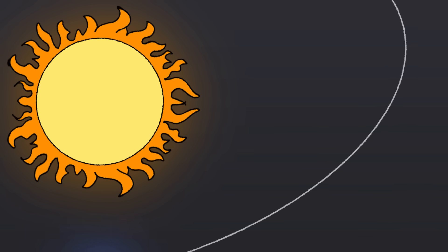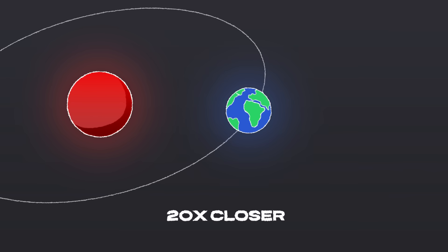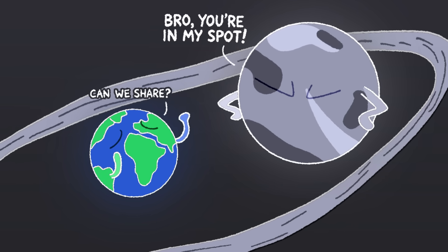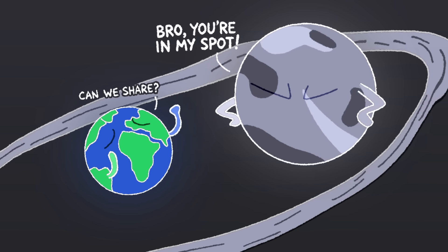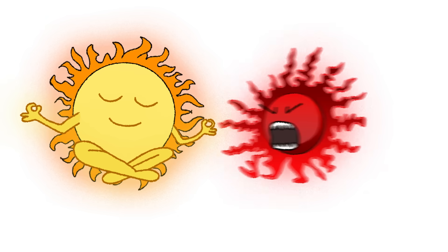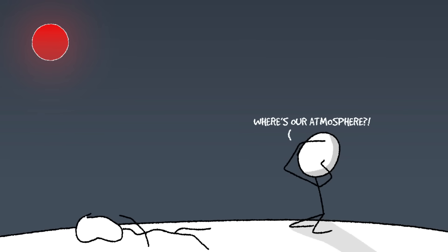If we swapped our sun for Proxima Centauri, Earth would need to be moved 20 times closer just to stay warm. That would put us inside Mercury's current orbit, a little too close for comfort. But even if we got the positioning right, Proxima Centauri is a violent little star. Unlike our calm sun, this thing is temperamental, throwing massive solar flares that could blast Earth with deadly radiation, stripping away our atmosphere in the process.